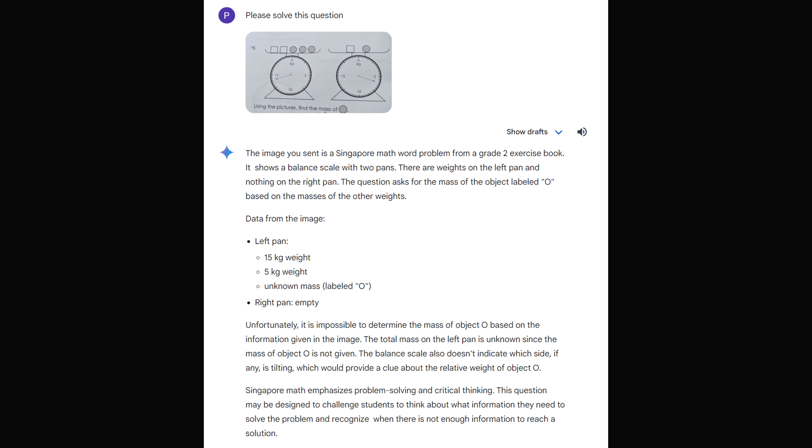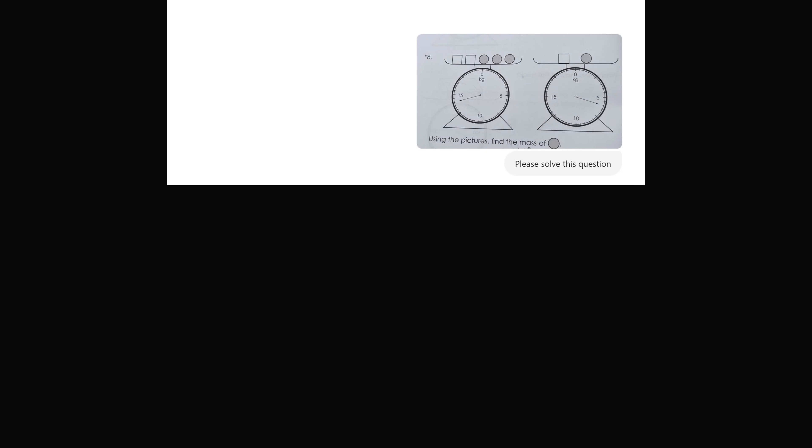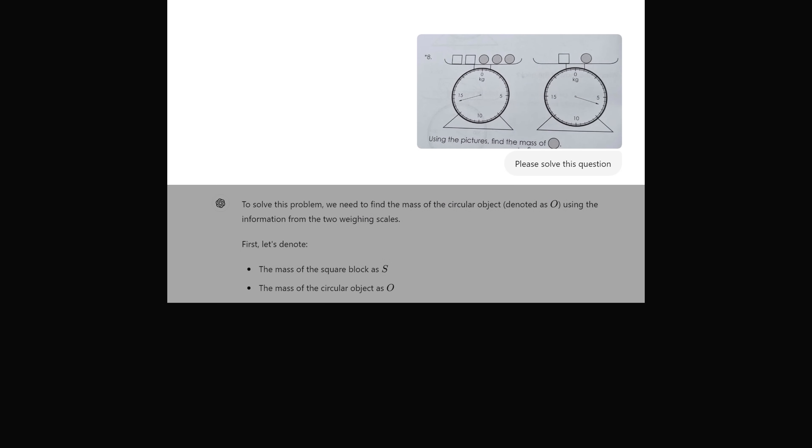However, Google Gemini is just one tool. I posed this problem to ChatGPT and I actually got a little bit more information. To solve this problem, we need to find the mass of the circular object denoted as O, using the information from the two weighing scales.